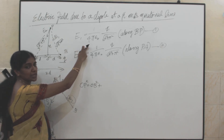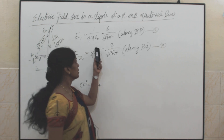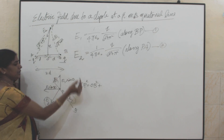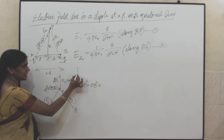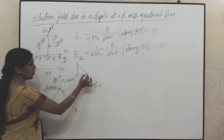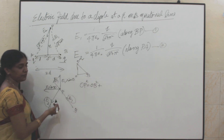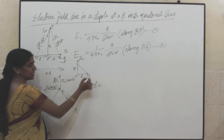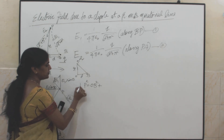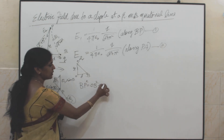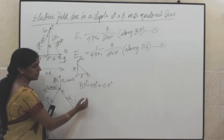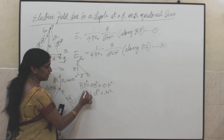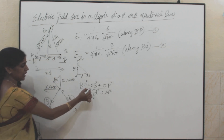Due to the charge plus Q, the electric field E1 will be 1 by 4 pi epsilon, multiplied by 1 over (D squared plus R squared). The distance BP is calculated using the right angle triangle OBP. By Pythagoras theorem, BP squared equals OB squared plus OP squared, which is D squared plus R squared. So BP equals root of D squared plus R squared.